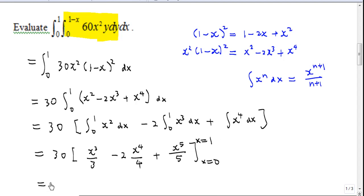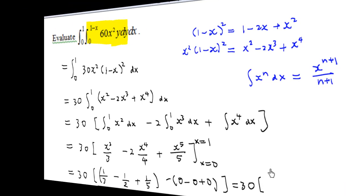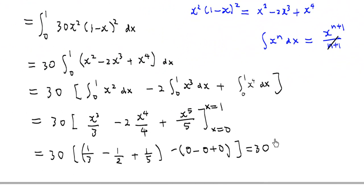After substituting x = 1 and x = 0: the first term gives 1/3, the second gives minus 1/2 (since 2 and 4 cancel), and the third gives plus 1/5. When x = 0 all terms are 0. So the answer is 30 times (1/3 minus 1/2 plus 1/5), which equals 30 times 1/30, giving a final answer of 1.